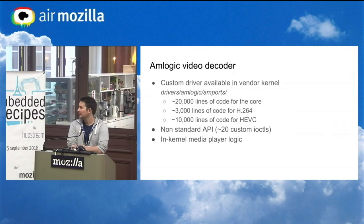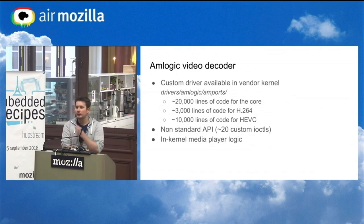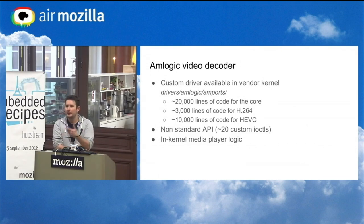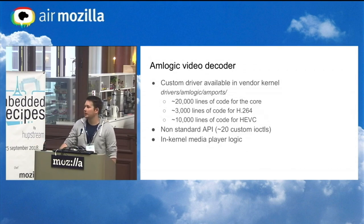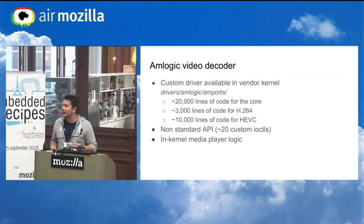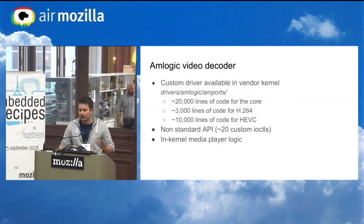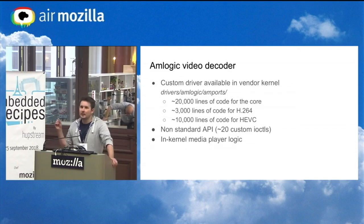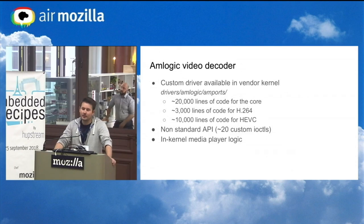When you want to write such a driver, you start looking at what you have available. Amlogic is pretty good on the open source side, which means they don't contribute much to the mainline kernel or mainline U-Boot, but they do give out periodic updates to their vendor kernel, like many SoC vendors do. They have a custom driver for their video decoder — quite a lot of lines. It's a non-standard API with custom IO controls, controlled by a userspace binary blob, and it has in-kernel media player logic, going straight from the decoder to the display inside the kernel with no userspace action at all.